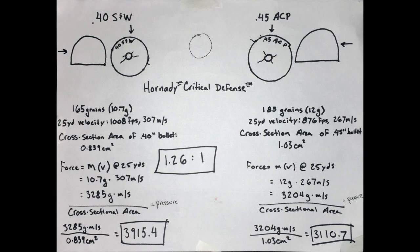The cross-sectional area of the 40 caliber bullet is 0.839 cm², and the cross-sectional area of a 45 caliber bullet is 1.03 cm².